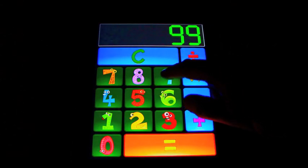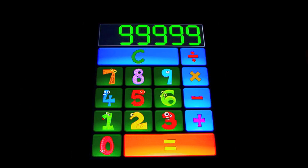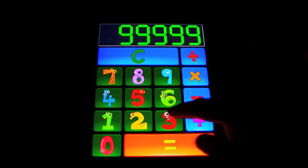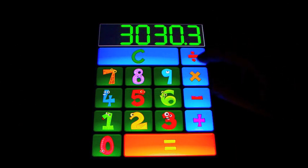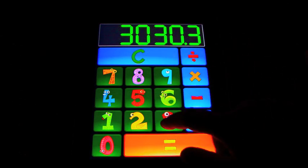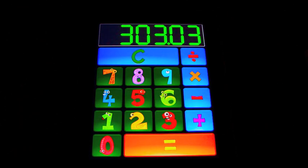Nine ninety nine, nine ninety nine thousand nine hundred ninety nine divided by three thirty three equals three thousand thirty point three divided by one ten equals three hundred three point zero three.